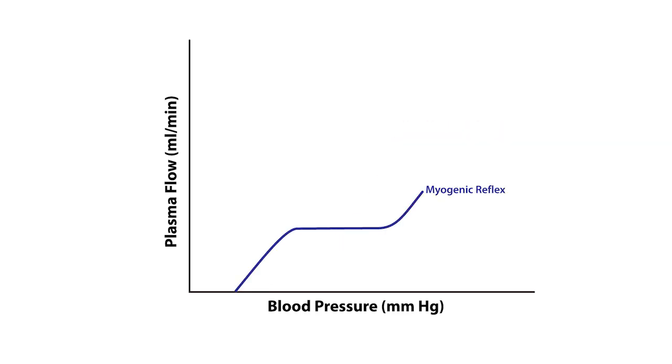Now, the flat part of the blue line is referred to as the myogenic reflex, because as the blood pressure begins to increase, arterioles apply an opposing resistance to maintain plasma flow constant. This ensures even perfusion of capillaries and avoids damaging capillaries.